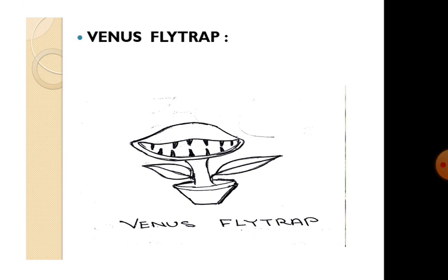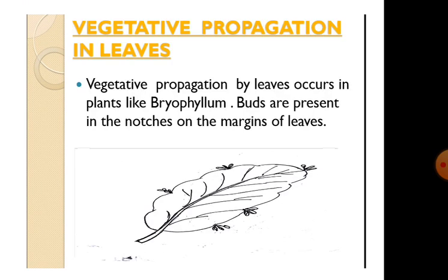Venus flytrap: in the Venus flytrap, each leaf has long pointed hairs like teeth, and the lamina is divided into two parts with the mid-rib acting as a hinge. When an insect is caught, the leaf closes and digests the insect. Vegetative propagation by leaves occurs in plants like bryophyllum. In bryophyllum, buds are present in the notches on the margins of leaves, and plantlets develop from these buds. When they detach from the parent plant, they develop into a new plant.